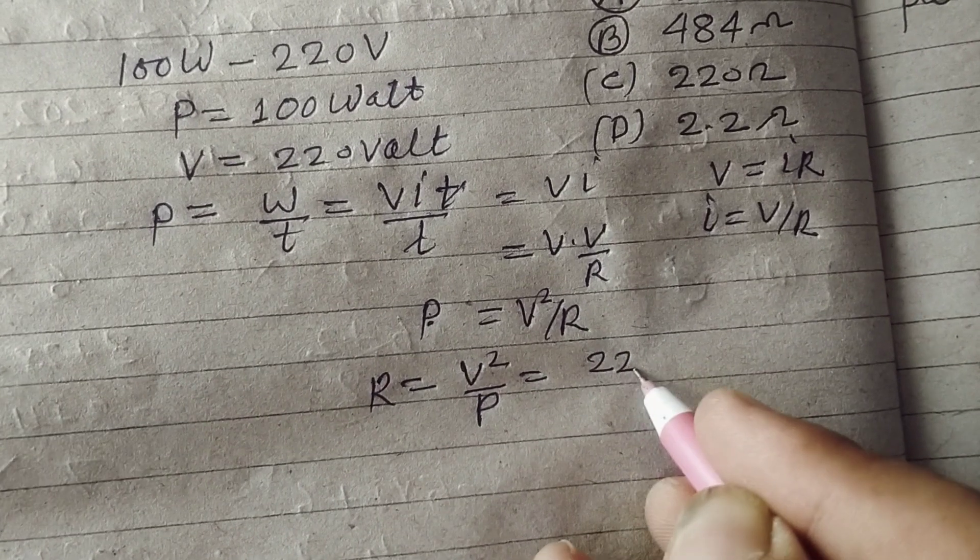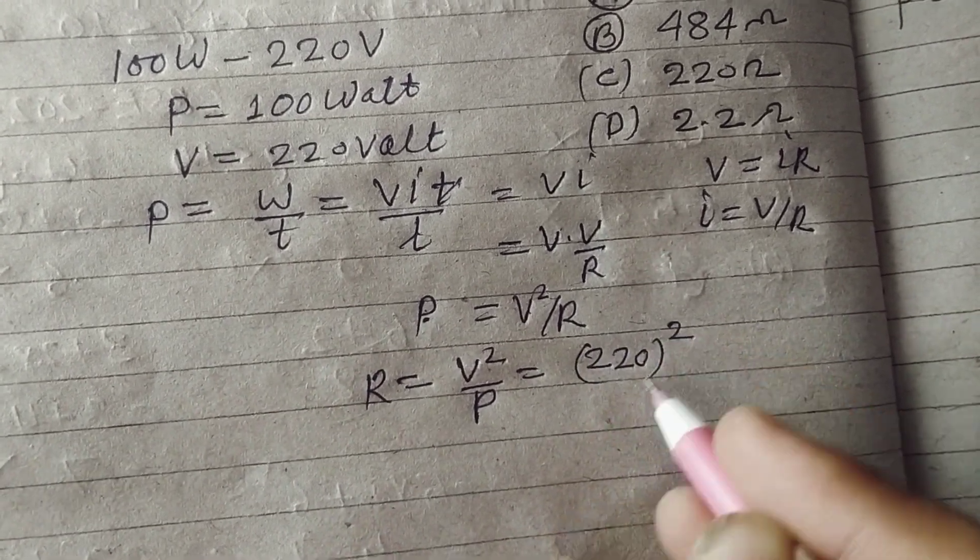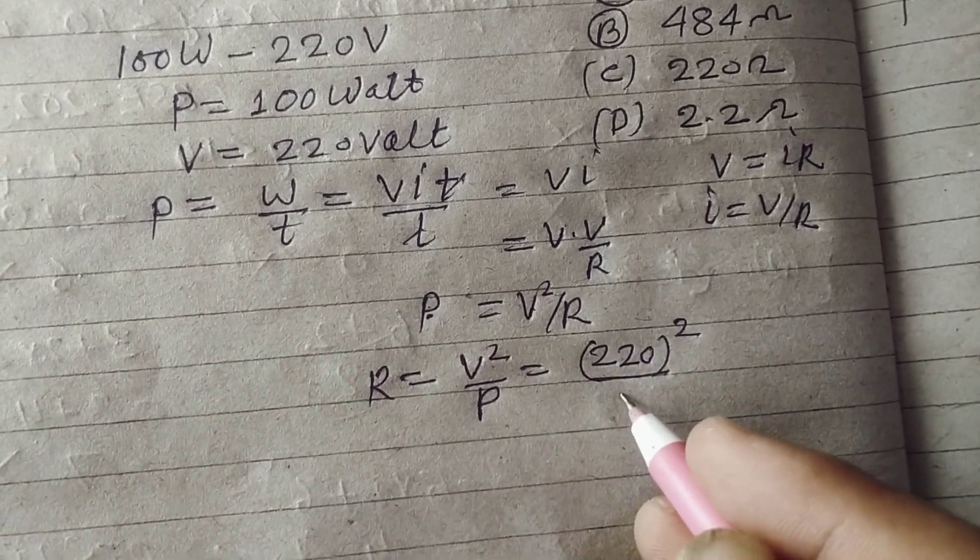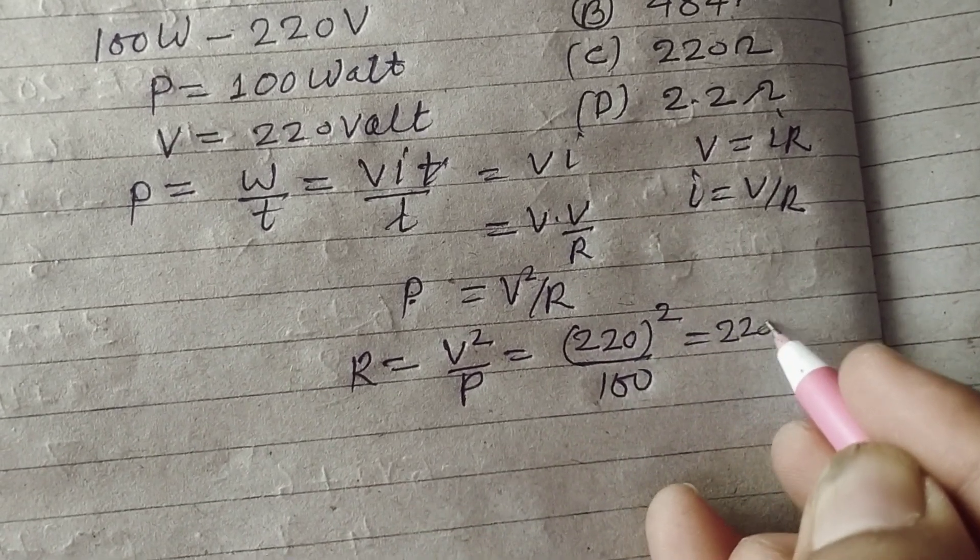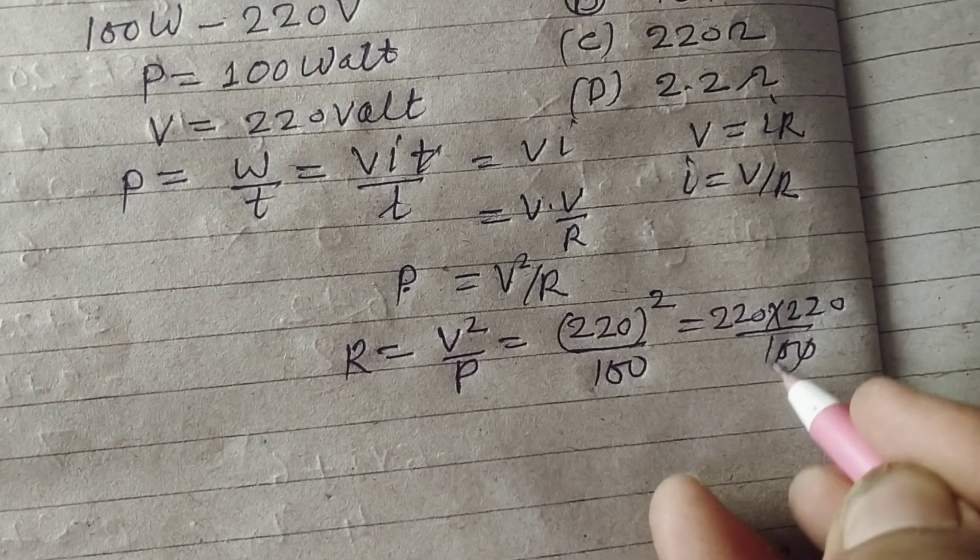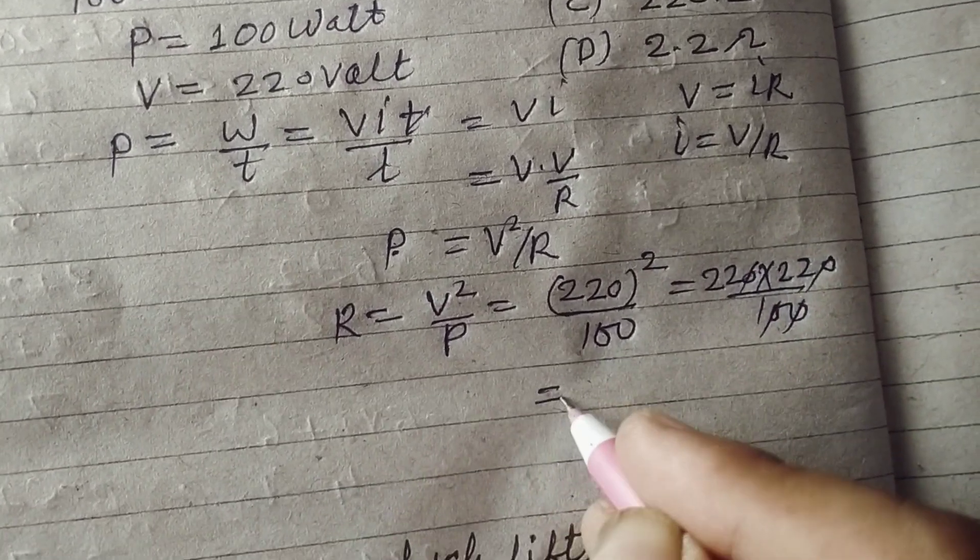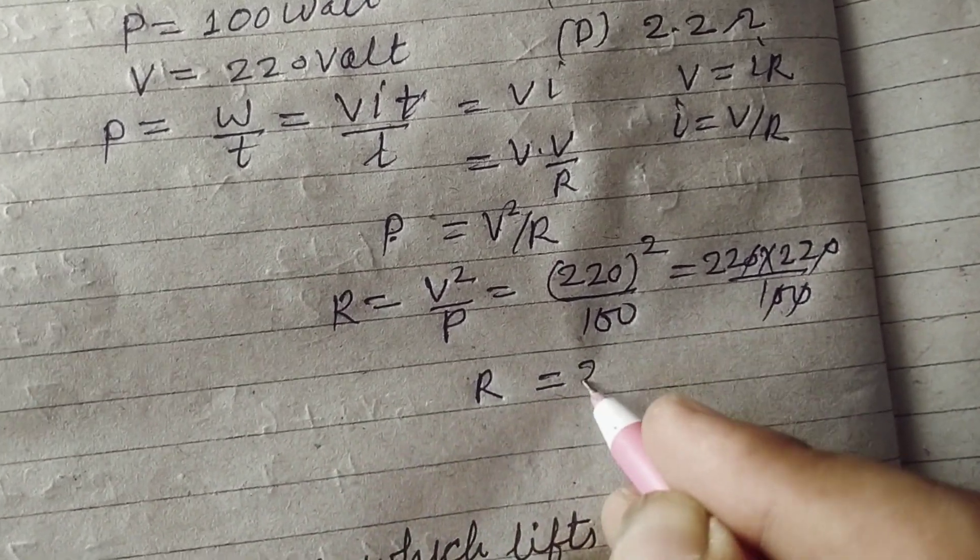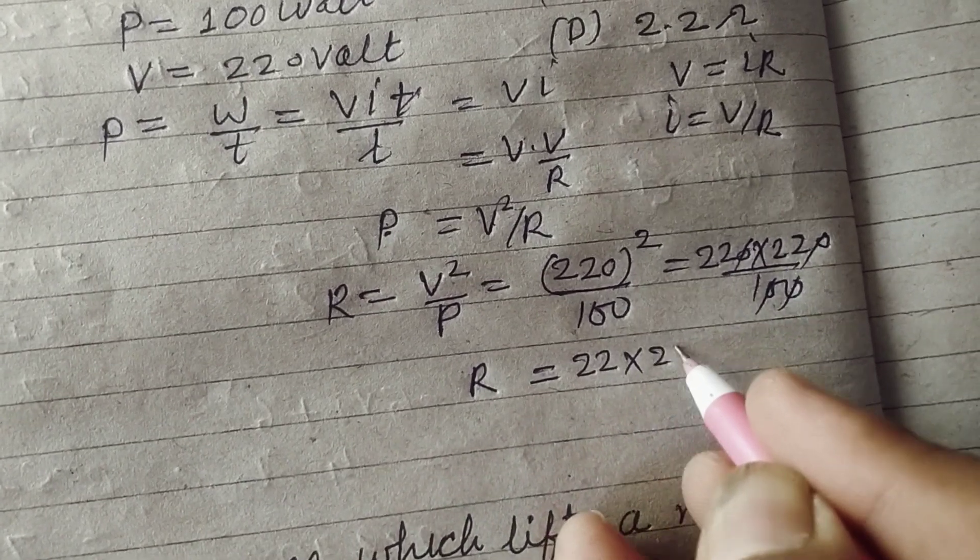V is 220V square upon P is 100. So this is 220V into 220V upon 100. So 2-0 cancel. We got resistance 22 into 22 Omega.